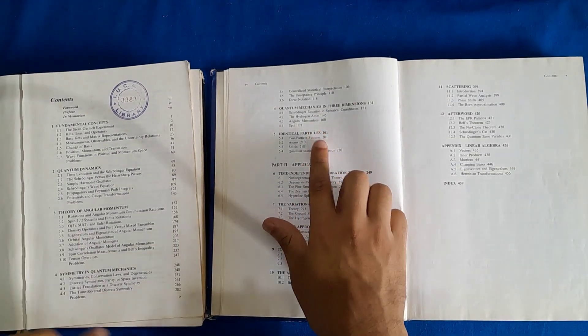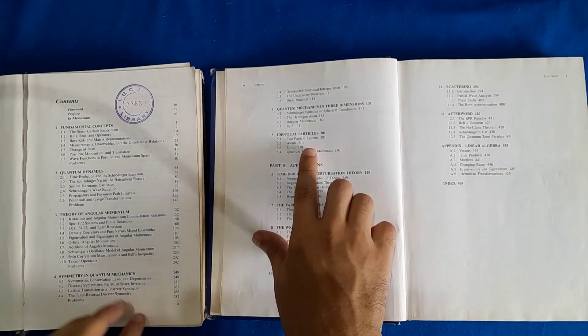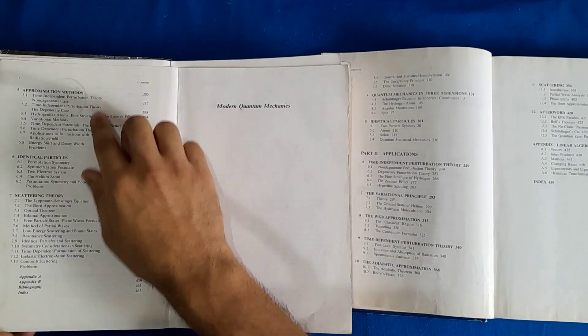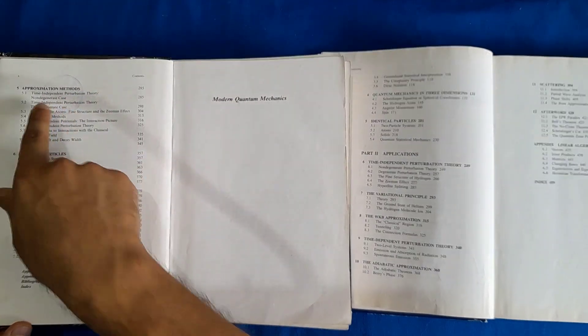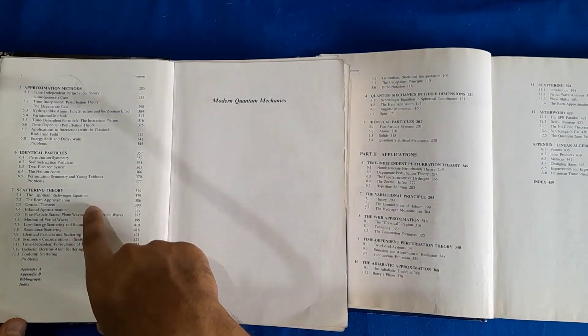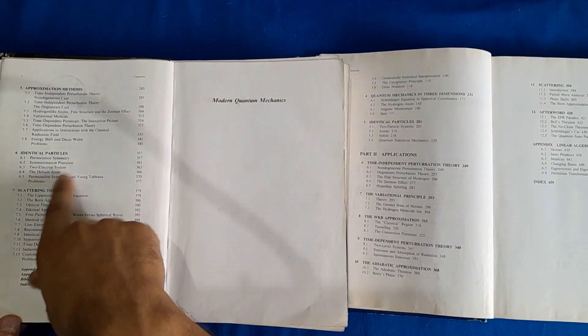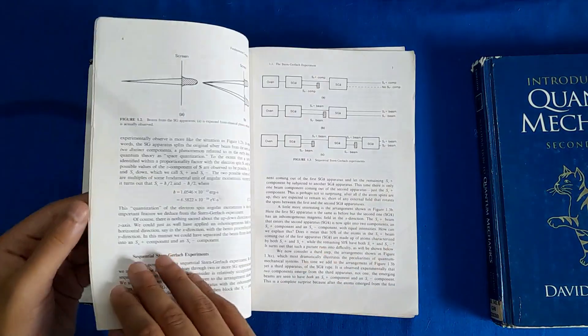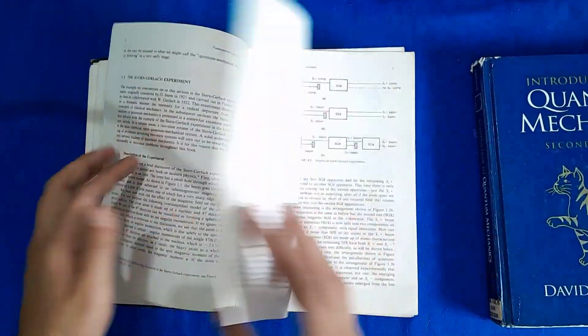Which is covered somewhere over here. Then you have symmetry, identical particles basically. You have some approximation methods, you go to perturbation theory time independent time dependent which is covered at the next part, then there is WKB and all. So then there's identical particles which is also covered here and then the scattering theory.